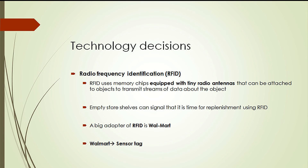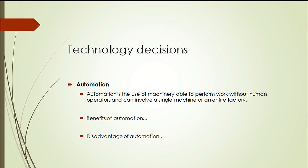Radio frequency identification, or RFID, is a wireless technology that uses memory chips equipped with radio antennas attached to objects, used to transmit streams of data. Automation is using machinery to perform work without human operators. Automation has the advantage of product consistency and the ability to efficiently produce large amounts of products.